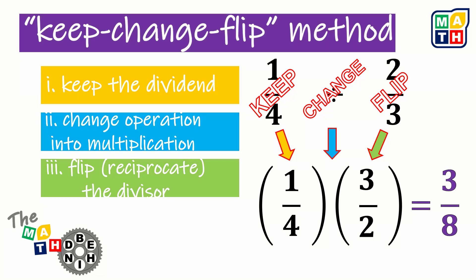So this would mean that the quotient when 1 fourth is divided by 2 thirds, the result is 3 eighths. We all know this process, but do we have an idea on what is really the math behind this method?